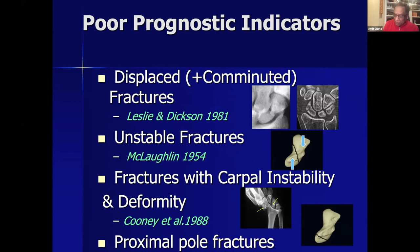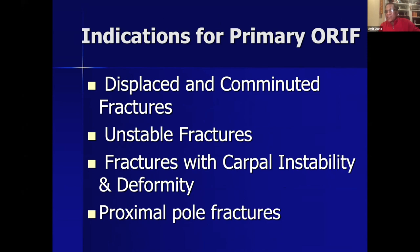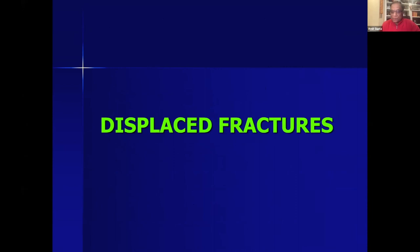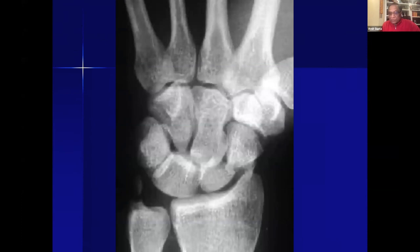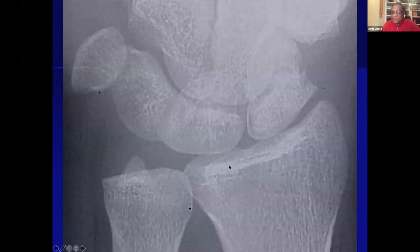Regarding displaced fractures: Edlin's 1975 study showed a 19% non-union rate overall, but when the fracture was displaced more than one millimeter, the non-union rate was 92%. Joe Dias meta-analysis and Graywall and Nina Su's studies showed 22% non-union in displaced and comminuted fractures. Displacement can be subtle in different planes and may require CT. For a truly undisplaced fracture, criteria must be strict: scaphoid angle less than 60 degrees, intrascaphoid angle less than 30 degrees, coronal intrascaphoid angle less than 40 degrees, and absence of comminution.